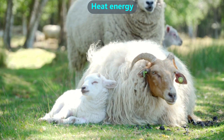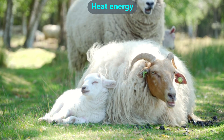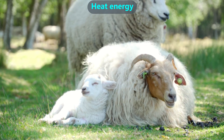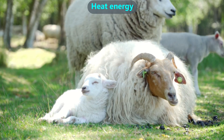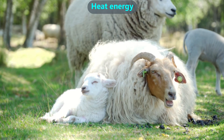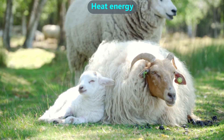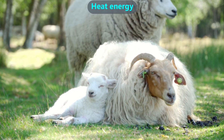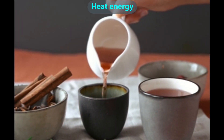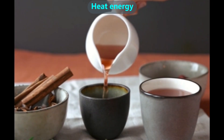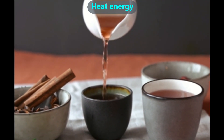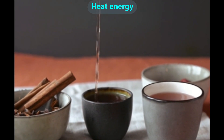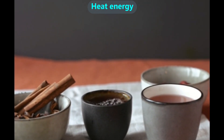Heat energy depends on the temperature and the mass of the body. In elementary school, we can think of mass as meaning the same thing as weight. This mother and her lamb are the same temperature, but the mother has more mass, so she has more heat energy. Since these two cups of tea come from the same pot and have the same temperature, the big cup has more total heat energy. If you drink the big cup of tea, you will get warmer than if you drink the small cup of tea.